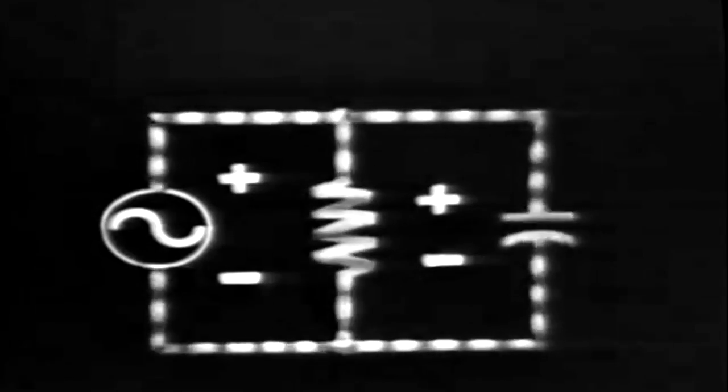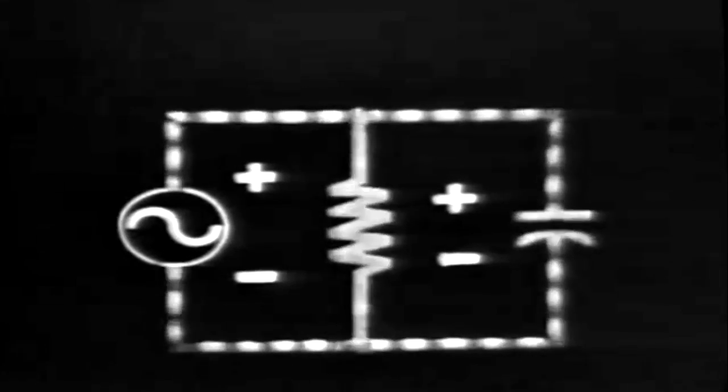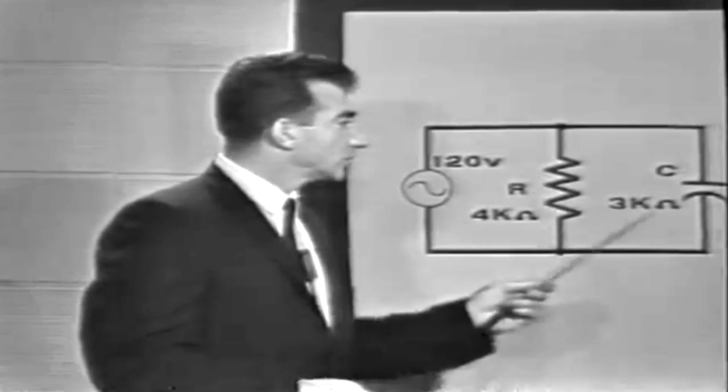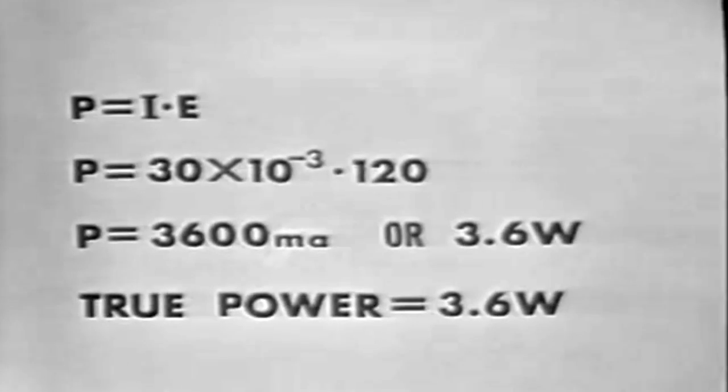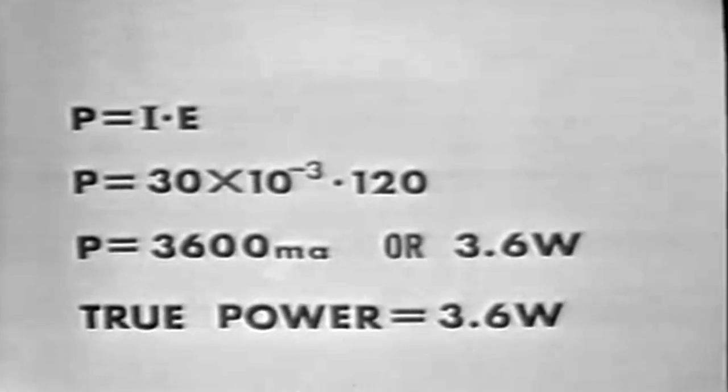When the first alternation occurs, current flows through the resistor and heat is generated — power is dissipated. Current also flows to the capacitor, but the energy is stored, not dissipated. On the next alternation, current flows through the resistor in the opposite direction and power is again dissipated, but the capacitor simply returns the stored energy and again no power is dissipated in the capacitive branch. Therefore, only the resistor dissipates power, but both components draw current. With IR equal to 30 milliamps, applying P equals I times E gives us 3.6 watts dissipated.